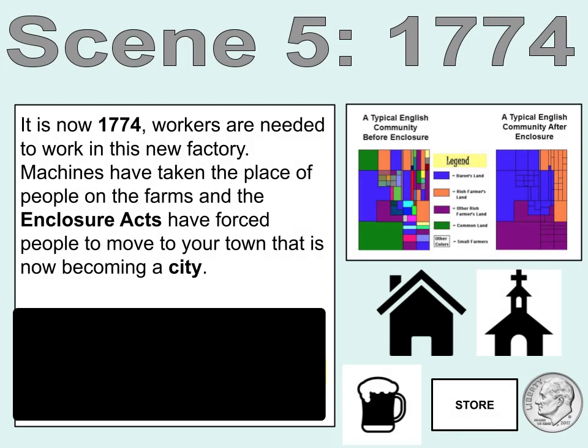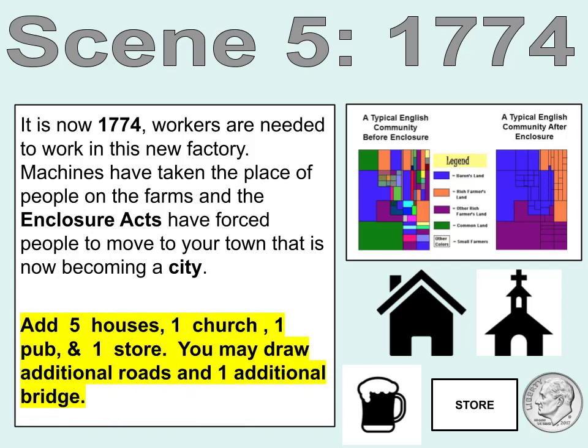The enclosure acts have forced people to move to your town that is now becoming a city. Add five houses, one church, one pub, and one store. You may draw additional roads and one additional bridge.